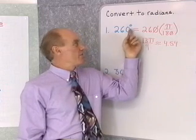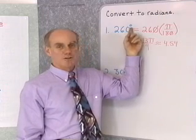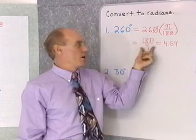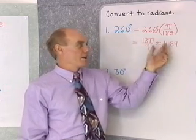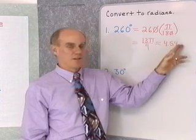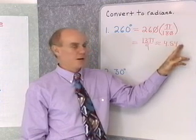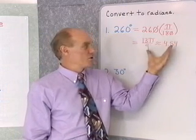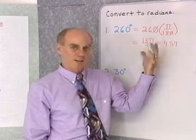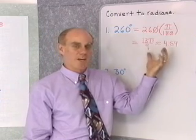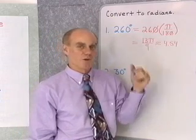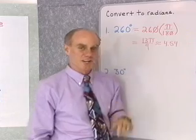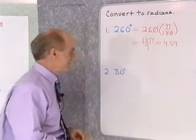When you have degree measure, you must show the little degree symbol. When you have radian measure, you can either write 'rad' afterwards or leave out the units completely. If the units are left out completely, that means we have an angle measured in radians. Radian measure is actually real number measure.